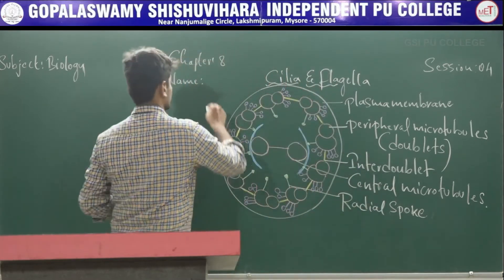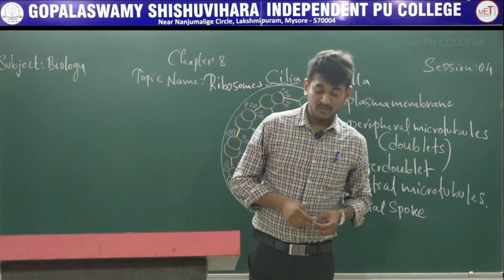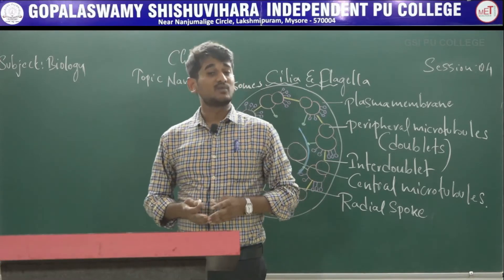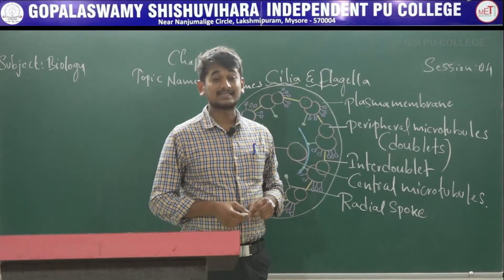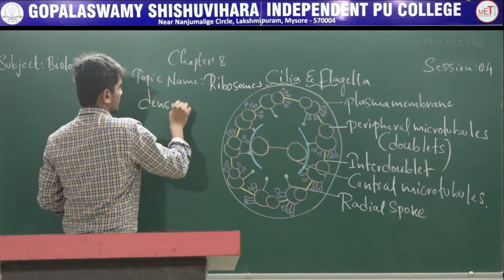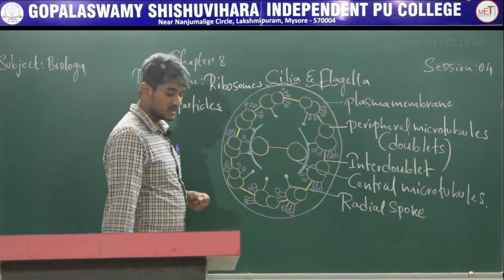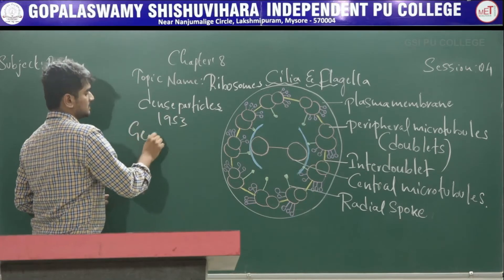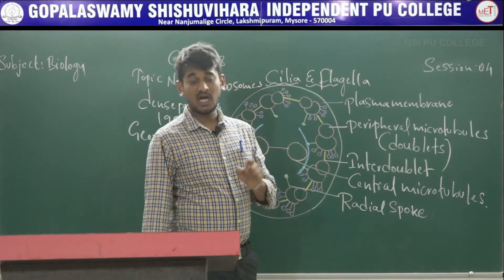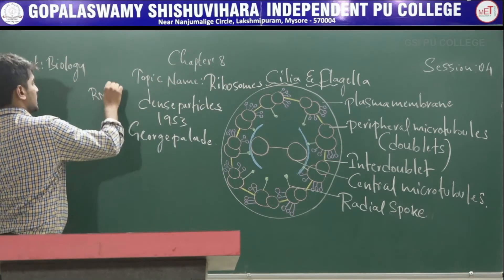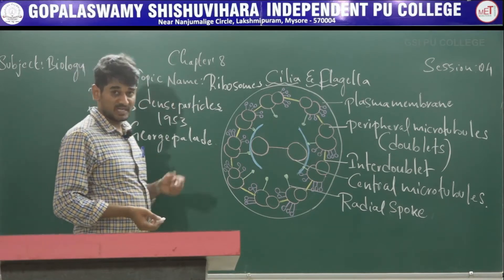The non-membrane-bound organelles — ribosomes. Dear students, we know about ribosomes. Ribosomes are commonly called as protein factory because they help in protein synthesis. These ribosomes are granular structures, first observed under electron microscope as dense, compact particles in the year 1953 by the scientist George Palade. Ribosomes are composed of RNA, which means ribonucleic acid, and some proteins, and they are non-membrane-bound organelles, which means not bounded by any membrane.